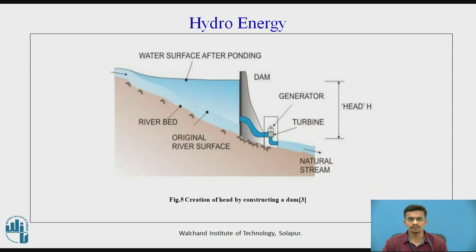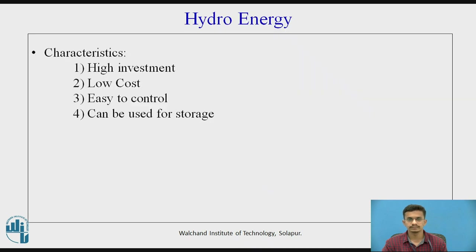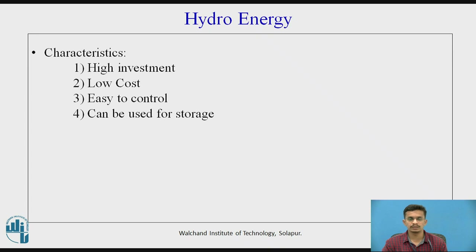The figure shows the creation of a head by constructing a dam, where the potential energy of stored water is used to run turbines, which with the help of a generator produce electricity. Characteristics of hydro energy include: it requires high investment but is a low-cost energy resource, meaning the cost per unit of electricity generated is very low. It is also easy to control and can be used for energy storage.